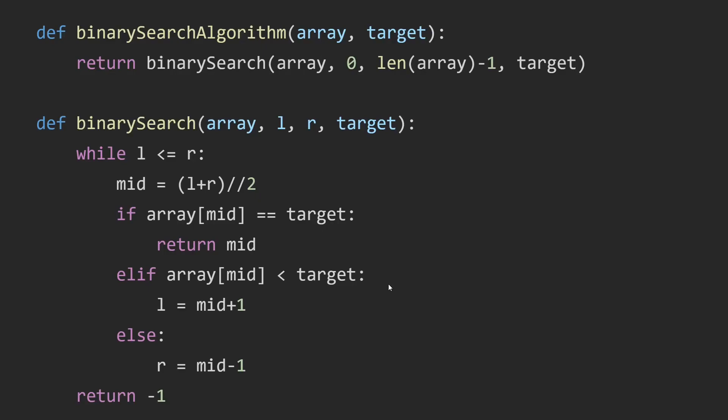If our number in the array at mid is smaller than the target, it means our target is in the second group, right? So we have to move L to mid plus 1. And lastly, if it's in the first group then we move R to mid minus 1. And after the while loop we know that R is to the left of L, and that's when we did not find our target and we return minus 1.